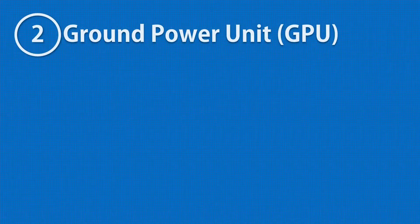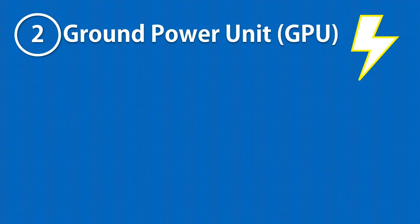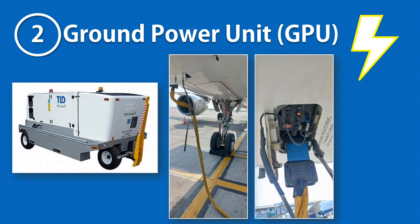An aircraft ground power unit is a ground support equipment that supplies electrical power to the aircraft on the ramp when the aircraft's engines are off.